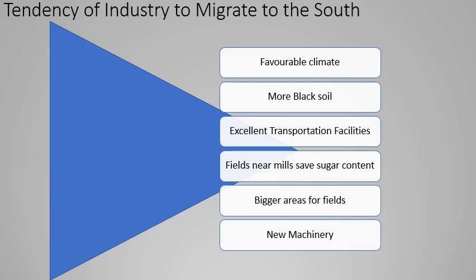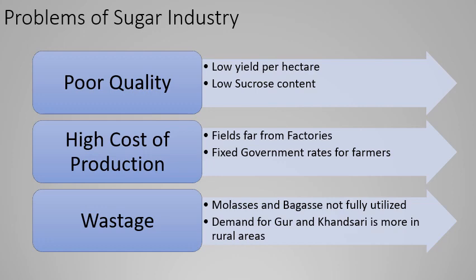Problems in the sugar industry include: low yield per hectare, low sucrose content giving poor quality in most parts, fields far from factories, government-fixed rates preventing farmers from increasing sugarcane prices making production costly, and molasses and bagasse not being fully utilized — unlike other countries where nothing goes to waste. Demand for jaggery — gur and khandsari — is more common in rural areas, so not much sugar is used in most parts of India.